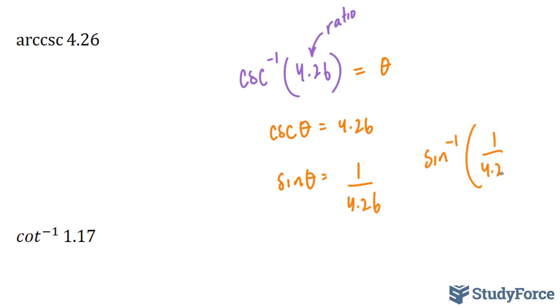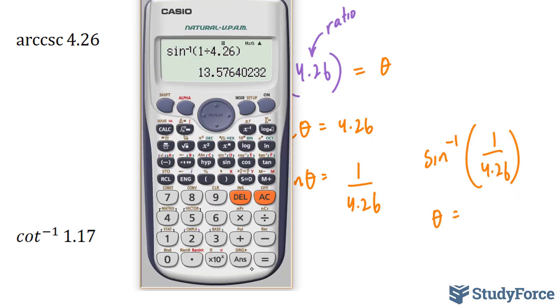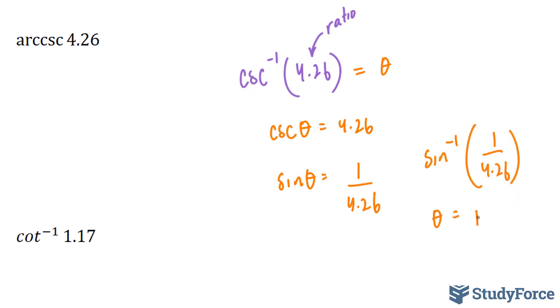1 over 4.26 gives us our theta. Again, 13.57, 13.57 degrees. Keeping in mind significant digits, as we did above, it was 13.6.